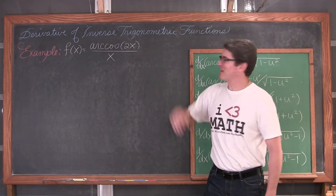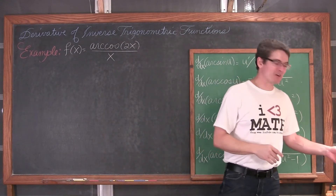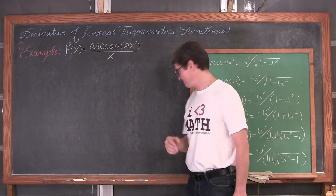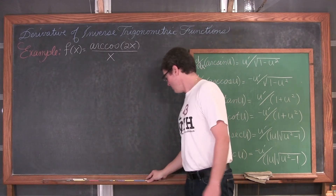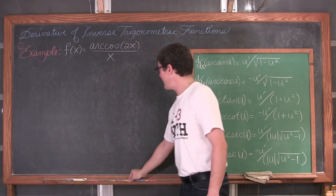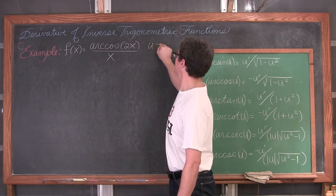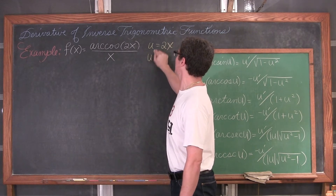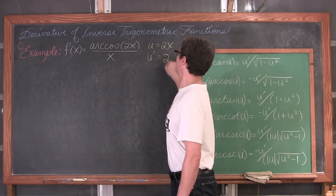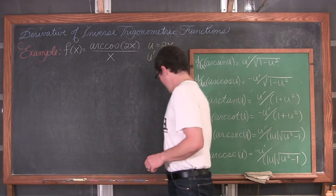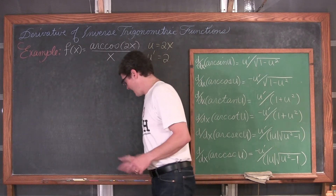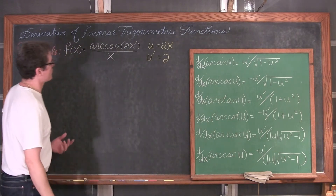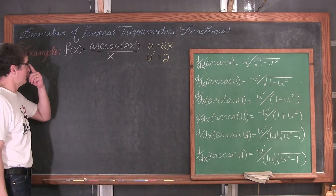Back again. We have f of x equal to arc cosine of 2x over x. So we have an inside function u equal to 2x, and u-prime equal to 2. We also have a quotient, so we have to use the quotient rule for finding the derivative.